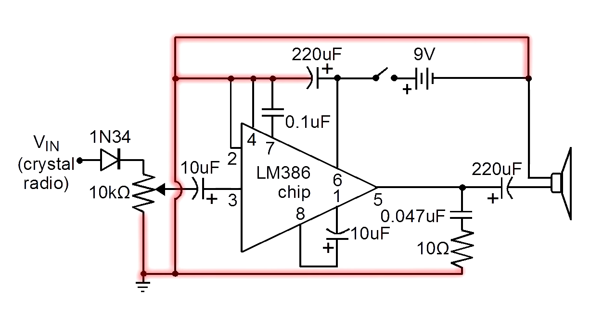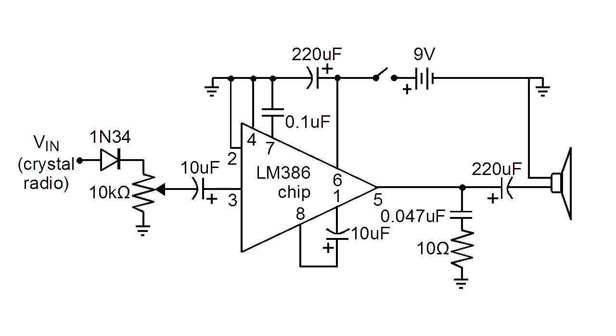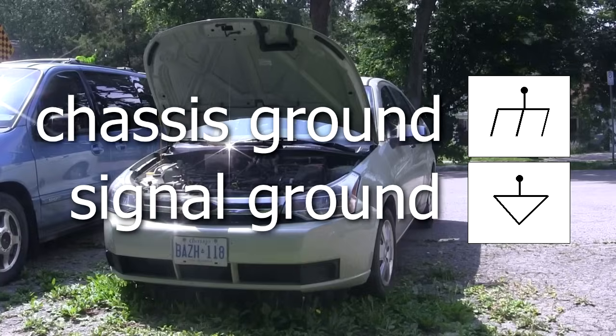Instead of drawing all those lines going to the one ground symbol, we can just draw in the ground symbol wherever needed. And it'll be understood that all those lines end up at the same ground. There are other types of grounds too.